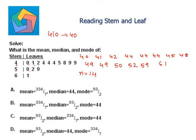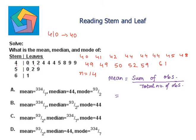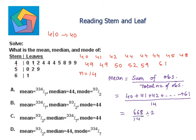So n equals 14. The mean is given by the sum of observations over the total number of observations. Adding 40 + 41 + 42 and so on up to 61 gives a sum of 668. Dividing 668 by 14, and simplifying by 2, gives 334/7. So the mean is 334/7.